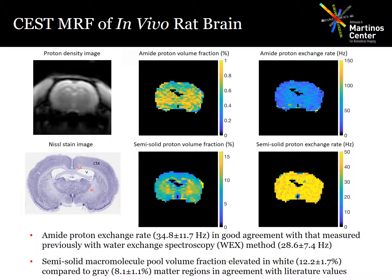We also tested our sequence on an in vivo healthy rat brain. The animal was anesthetized and scanned on a 4.7 Tesla Bruker scanner with a birdcage coil for transmit and a four-channel phased array for receive. The amide and semi-solid proton volume fraction exchange rates were mapped, and we found good agreement between the amide exchange rates obtained with CEST MRF and those obtained with the water exchange spectroscopy method. Also, the semi-solid volume fraction was elevated in white matter compared to gray matter, which is consistent with previous studies in the literature.